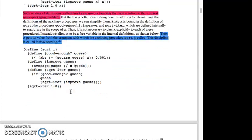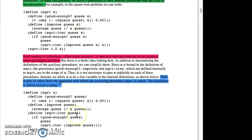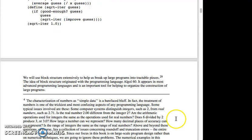Up here x is given to each of them, down here it's just not. We will use block structure extensively to help us break up large programs into tractable pieces. The idea of block structure originated with the programming language ALGOL 60. It appears in most advanced programming languages and is an important tool for helping to organize the construction of large programs.